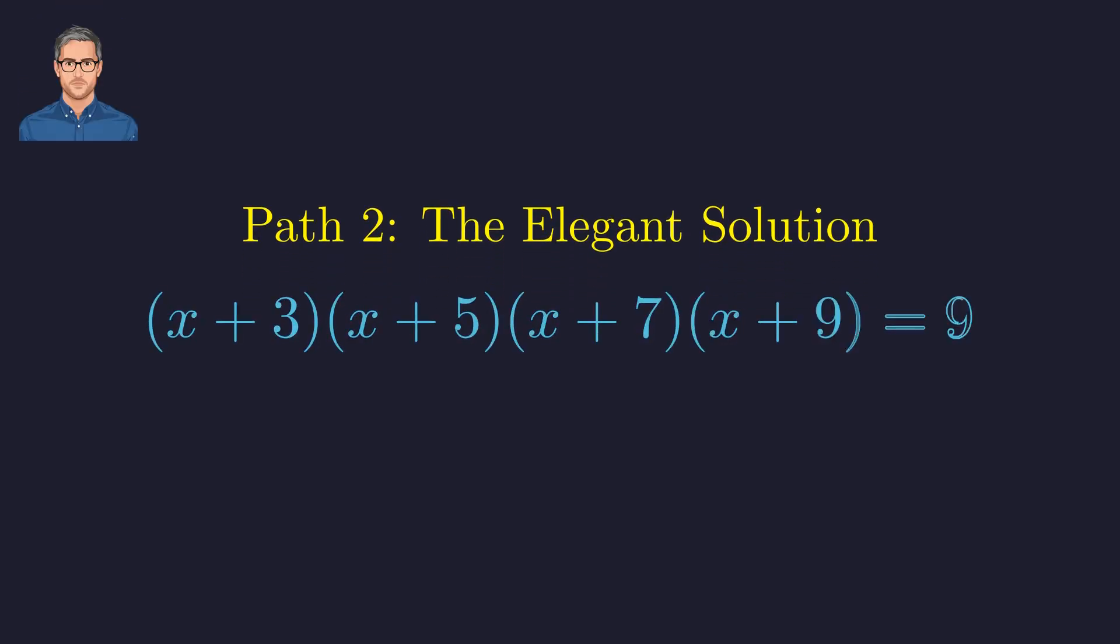Look again at the original equation, specifically at the constants. Notice the symmetry. 3 plus 9 is 12, and 5 plus 7 is also 12. This is the key.